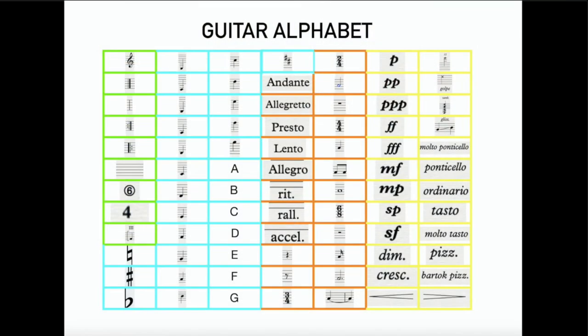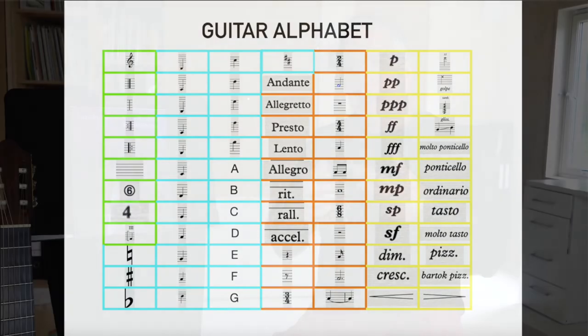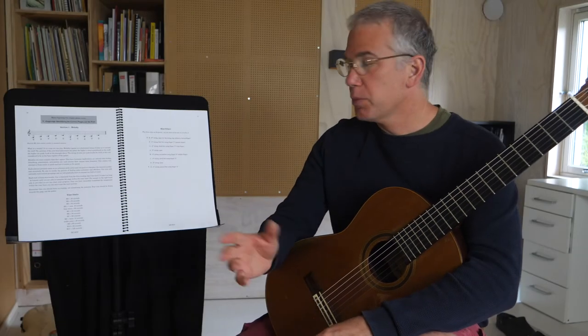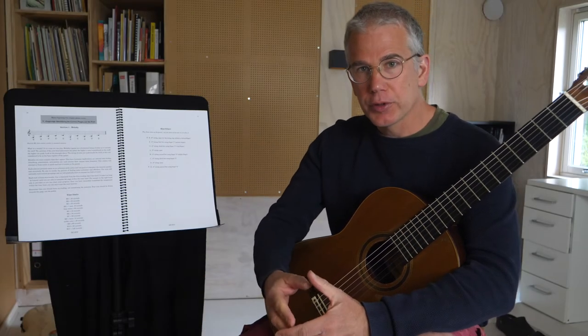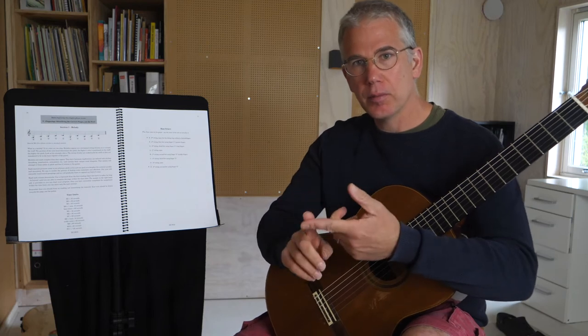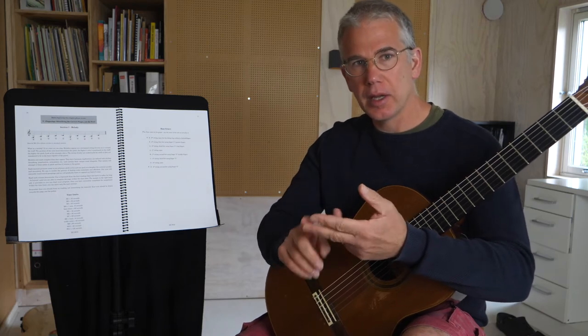This book introduces us to the symbols found in guitar notation. Each of the symbols are placed in a category, and we go through a series of lessons that automatize the connection between what is read on the page and how it's reproduced on the guitar. This book is made up of four chapters: melody, rhythm, harmony, and sound variation.